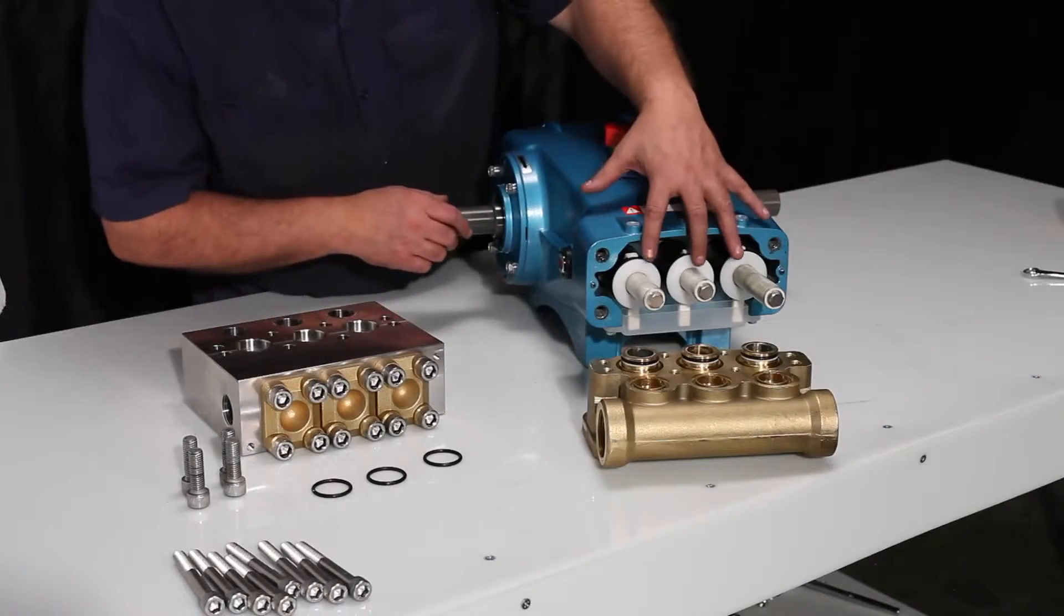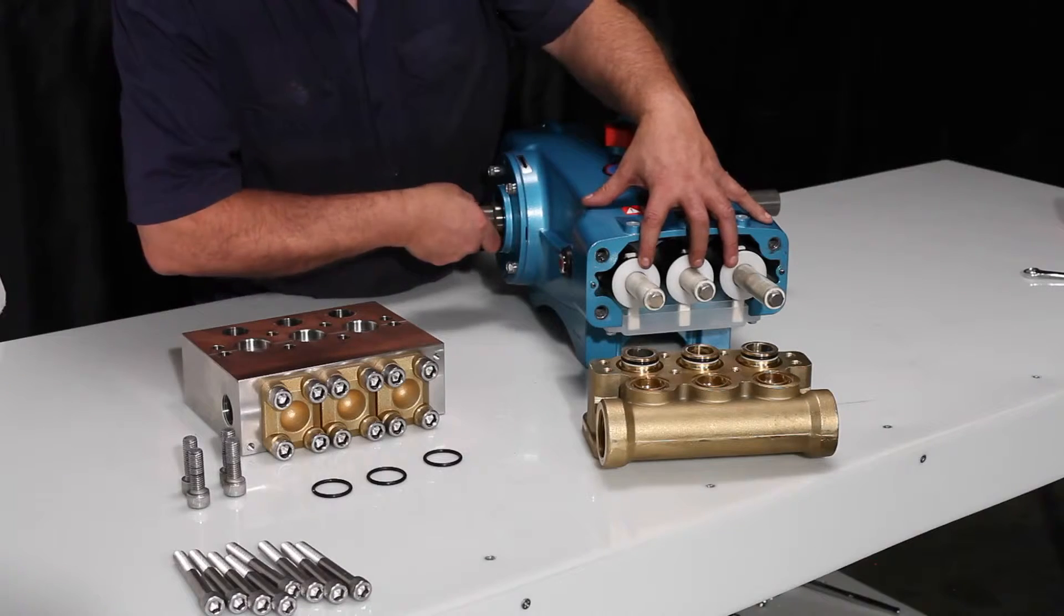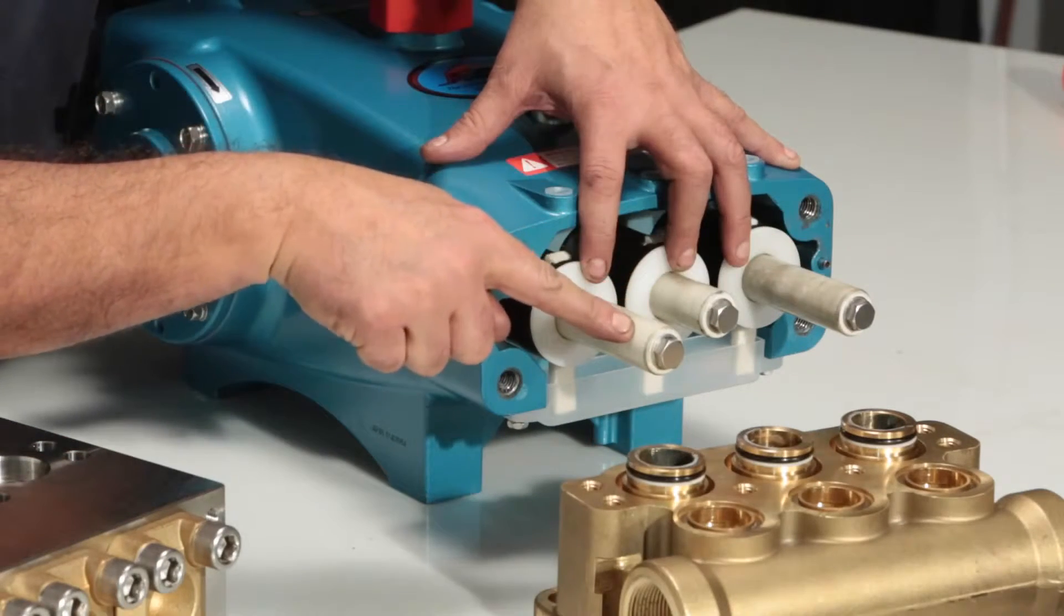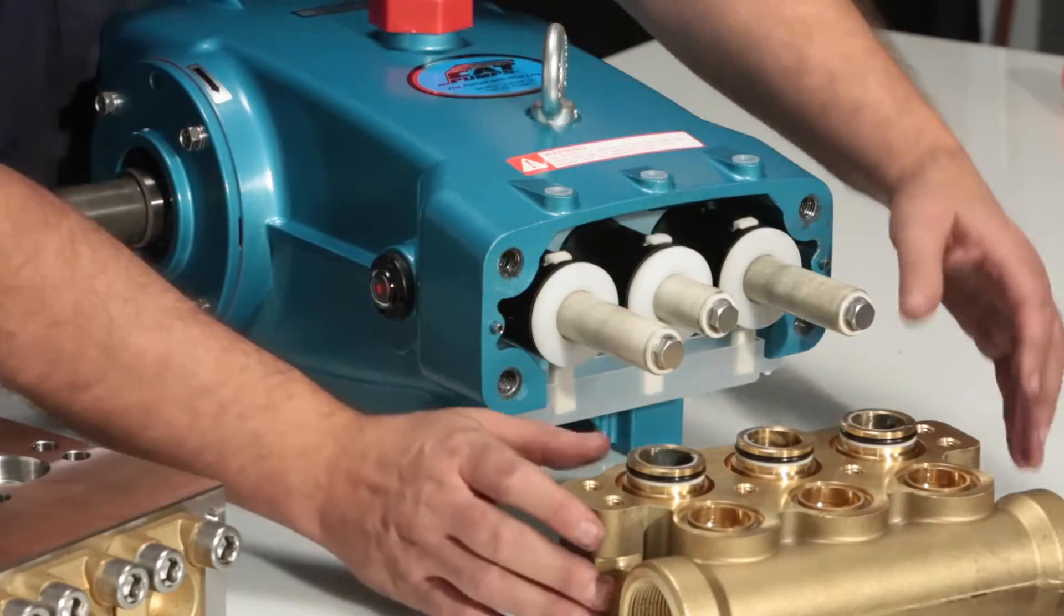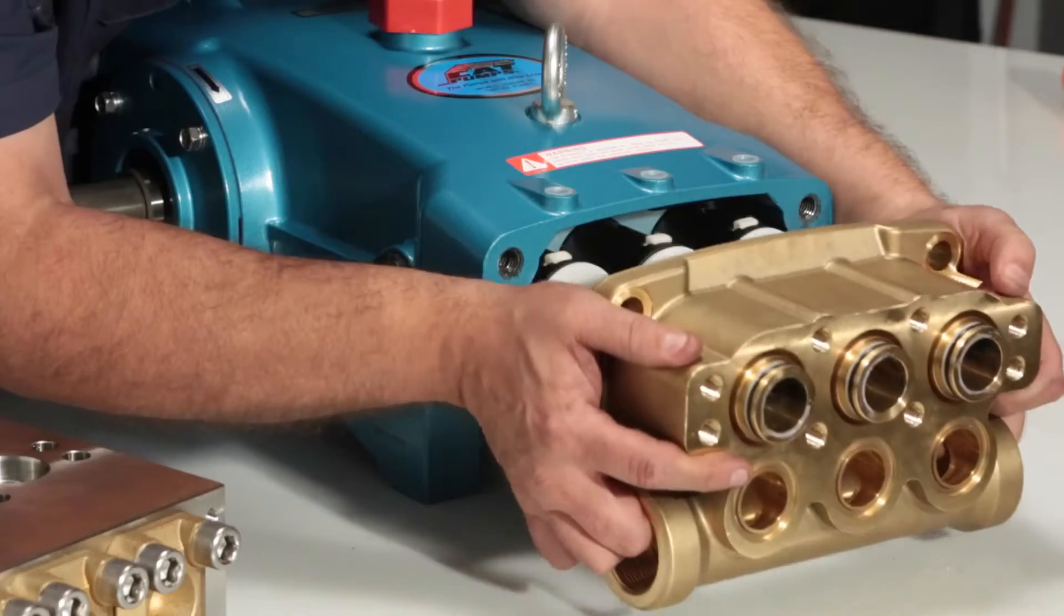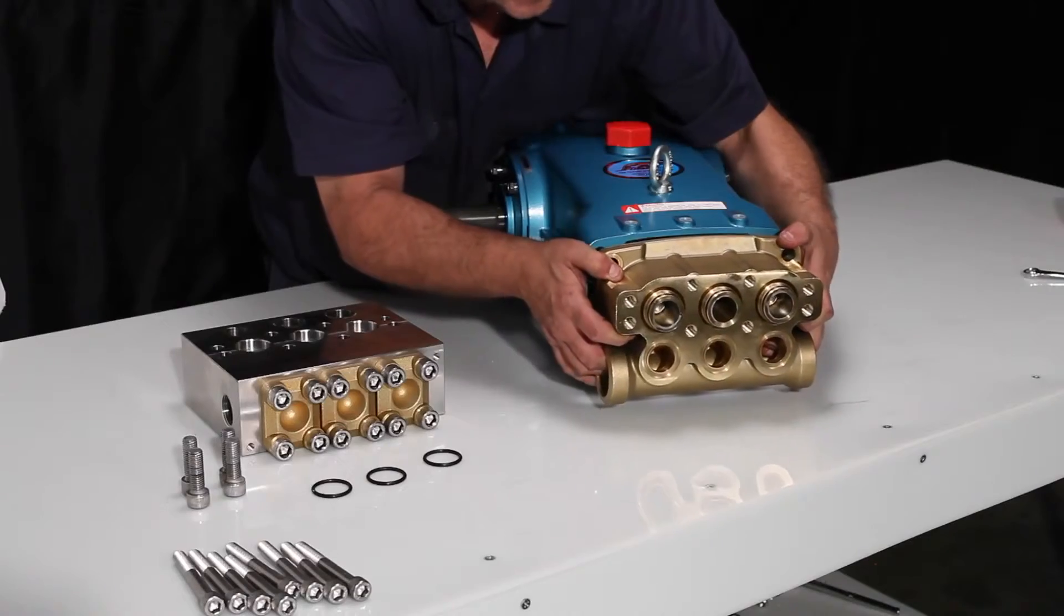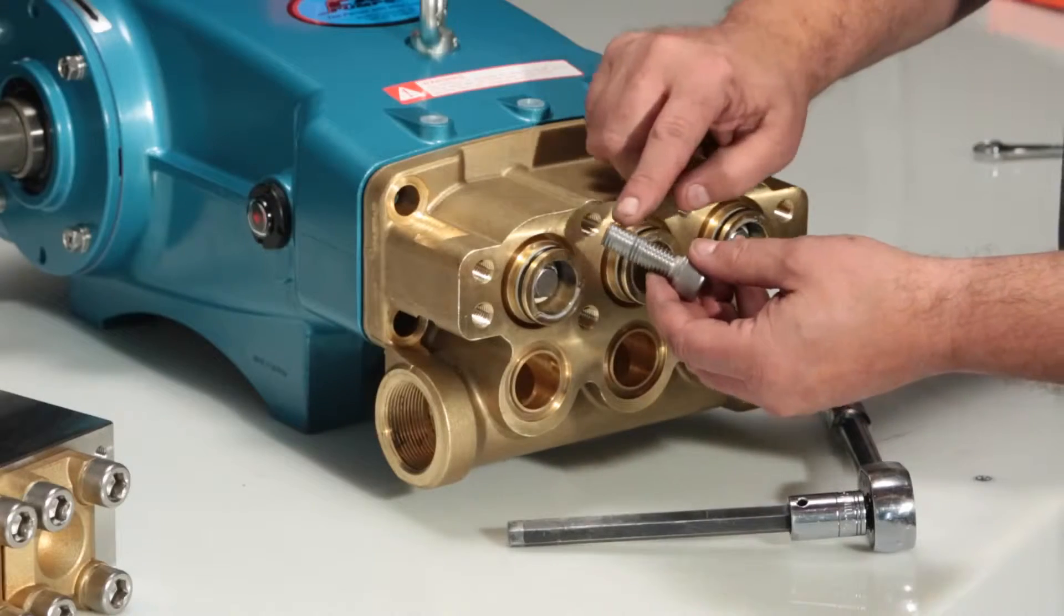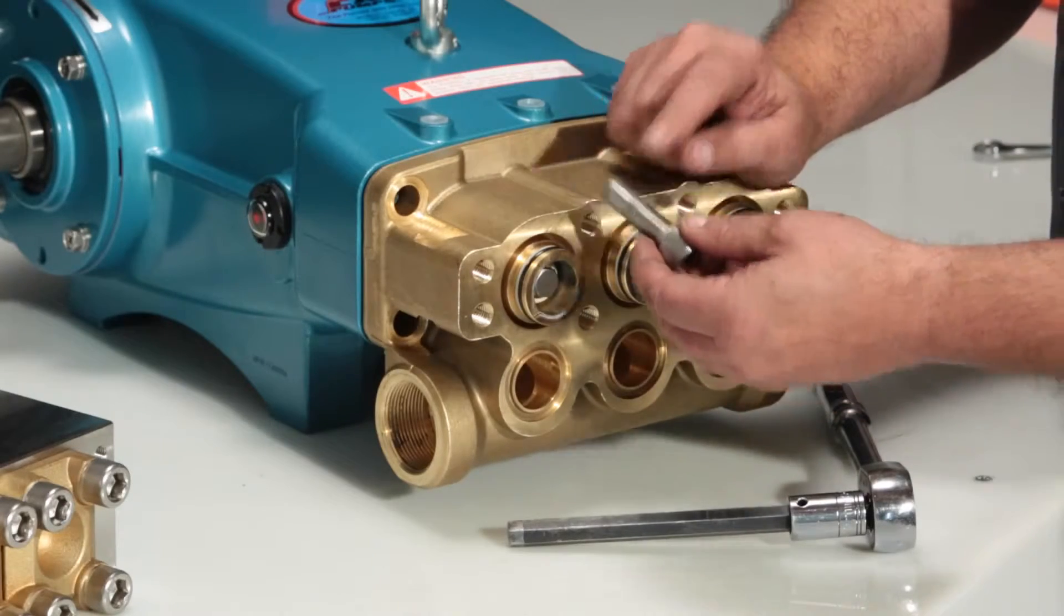To install the manifold, first rotate the crankshaft until the two outside plungers are at even distance from the crankcase. This will provide assistance when installing the inlet manifold. Replace the inlet manifold and press into place. Install the four manifold bolts and torque to proper specification.